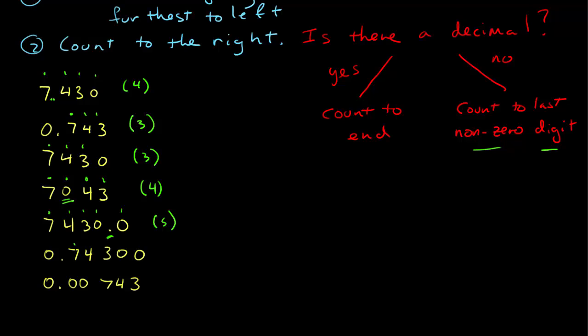The non-zero furthest to the left is 7: 1, 2, 3, 4, 5. Count to the end because there is a decimal place.